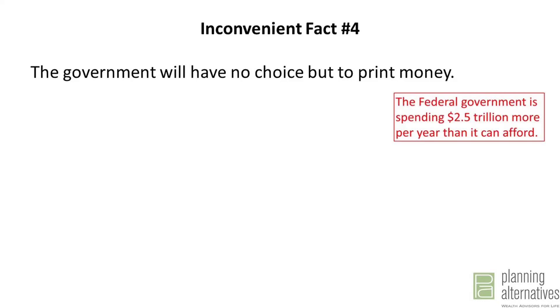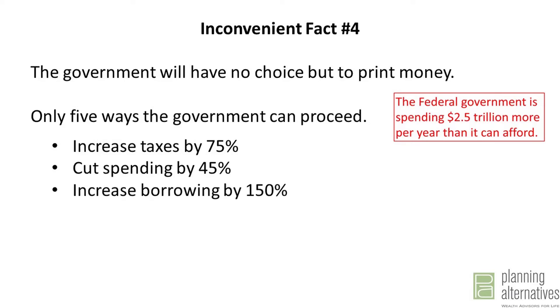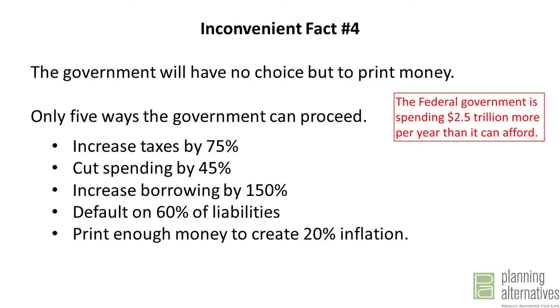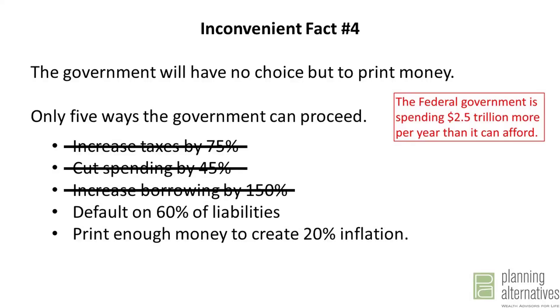And that leads us to inconvenient fact number four: the government will have no choice but to print money. Given that the federal government is spending $2.5 trillion more per year than it has, there are only five ways it can proceed: increase taxes by 75%, cut spending by 45%, increase borrowing by 150% per year, default on 60% of liabilities, or print enough money to create about 20% inflation per year. We've already seen that 60% of American households are net recipients, so we can expect tremendous political pressure against any attempt to increase taxes or cut spending. Increasing borrowing doesn't solve the problem — it simply pushes it into the future.